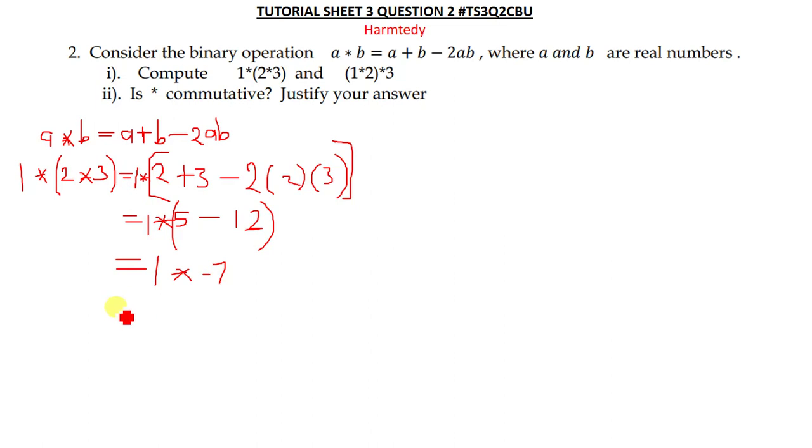This equals 1⋆(-7). Now we'll find 1⋆(-7) using this same expression. Where there's a we're putting 1, where there's b we're putting -7. So: 1 + (-7) - 2(1)(-7). This gives us 1 - 7 = -6, then minus -14, which gives us positive 14. When you add this you get 8 as the answer.